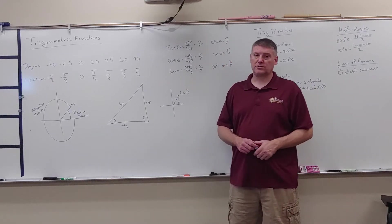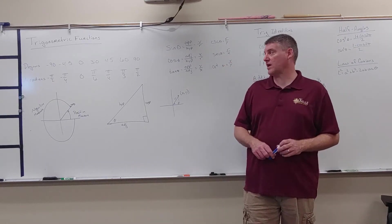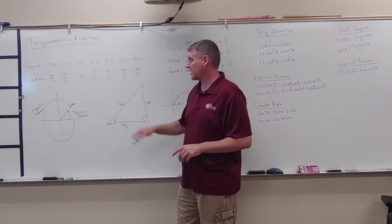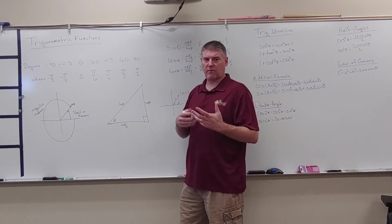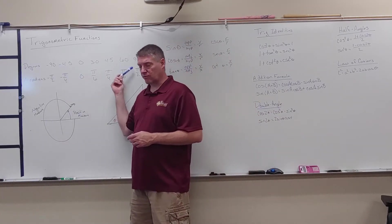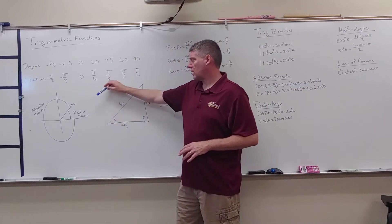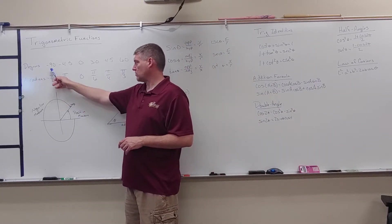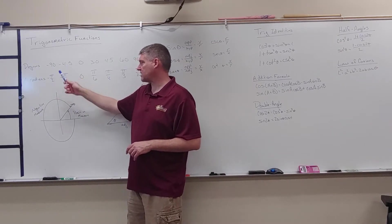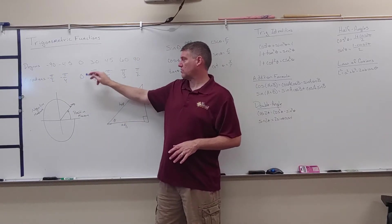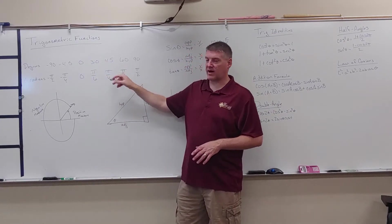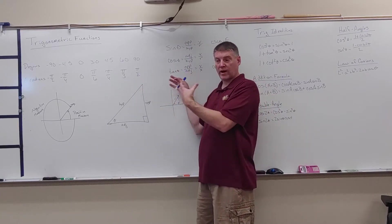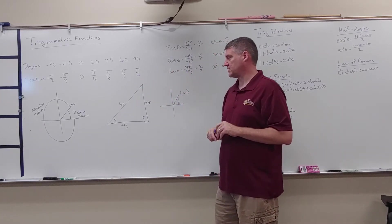Alright, we're going to talk about trigonometric functions today. This is part of my radian conversion here. I didn't put it all up there, but I wanted to remember that if I have degrees, those relate to a radian value. So negative 90 is negative pi halves, negative 45 is negative pi fourths, zero to zero, 30 to pi sixths, 45 to pi fourths, 60 to pi thirds, 90 to pi halves, 180 to pi, and 360 to 2 pi.